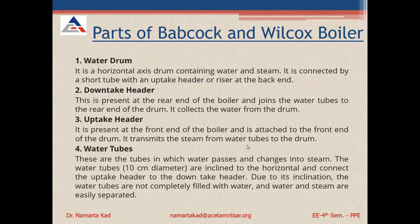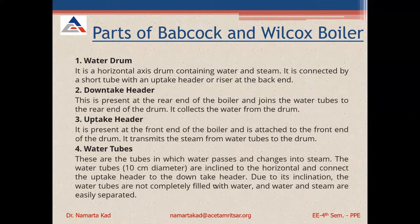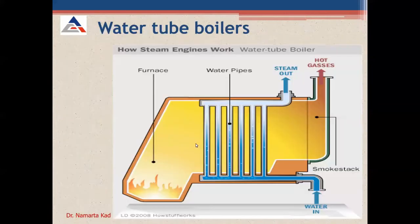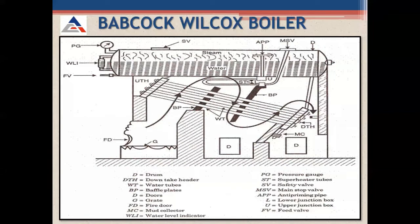The water tubes are the tubes in which water passes and changes into steam. These 10 cm diameter tubes are inclined to the horizontal and connect the uptake header to the downtake header. Due to their inclination, the tubes are not completely filled with water, so water and steam are easily separated. Water assembles near the downtake header portion, and as it heats, the steam moves toward the uptake header.